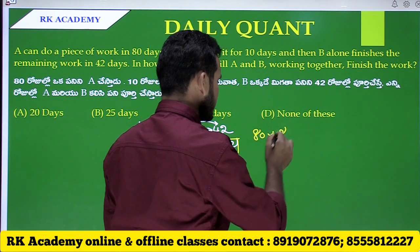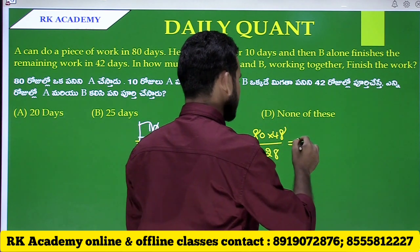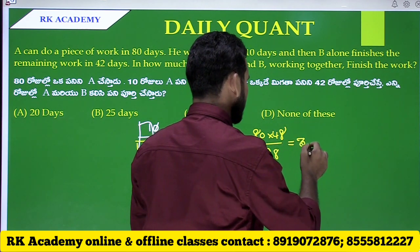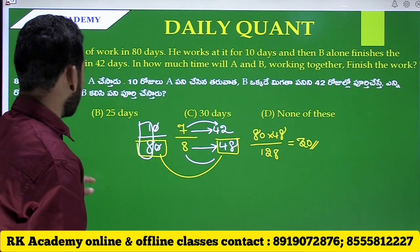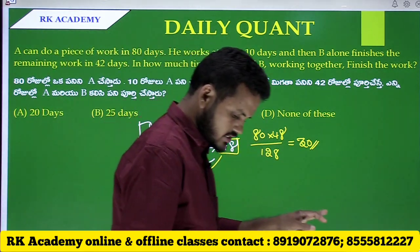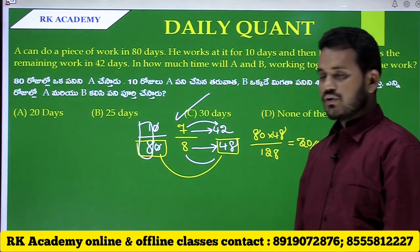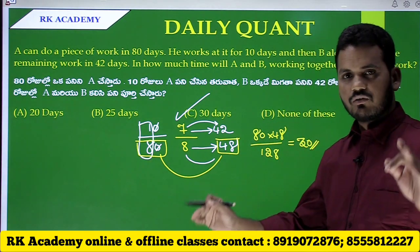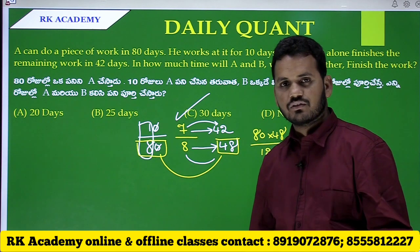Together, we use the formula xy by x plus y, where x equals 80 and y equals 48. We will now solve this problem to find the time A and B take together.